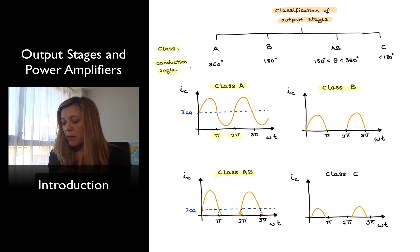And we achieve that by biasing that output transistor at the value that ensures the transistor is conducting for slightly over half a period so the transistor is still on during a portion of the second half of the cycle there between pi and 2 pi radians.